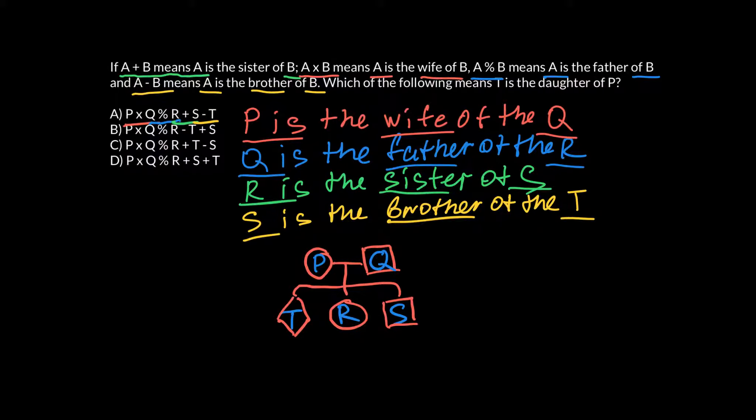Now let's read the question, which of the following means T is the daughter of P. We cannot say that here T is the daughter of P because sex of the T is not specified. But we don't have to build the same pedigree for each answer. If you would take a look, you would see that the first three letters in each answer is the same. So it states the same thing that P is the wife of Q and Q is the father of R. But the rest here is different.